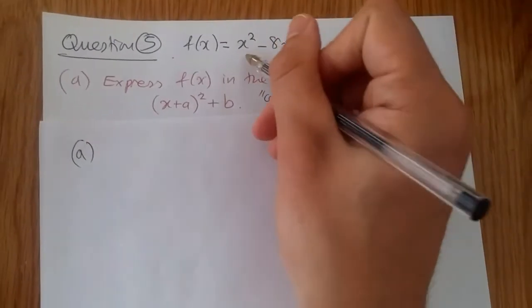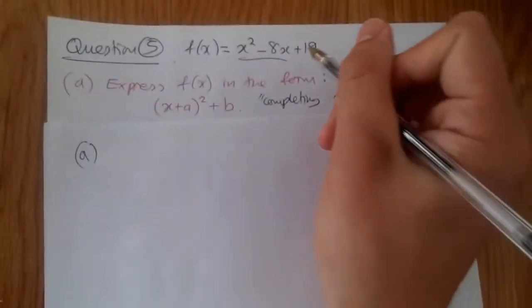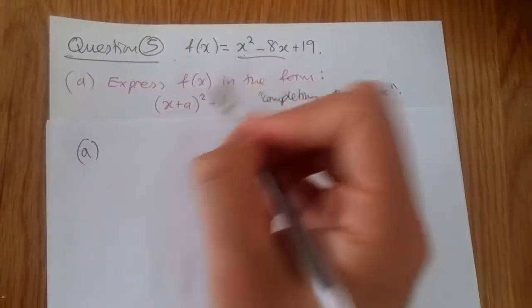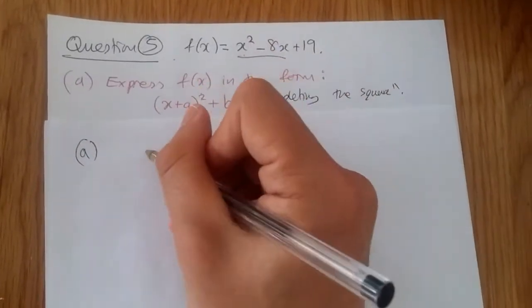All you really do is consider the first two parts and then half the second number. Copy the rest and then minus the square of that half number. And just wrap up in a bracket. So let's do this.